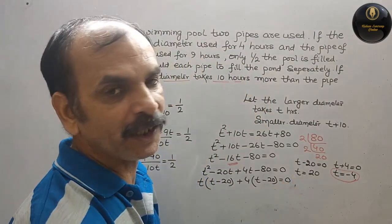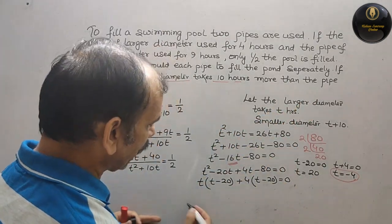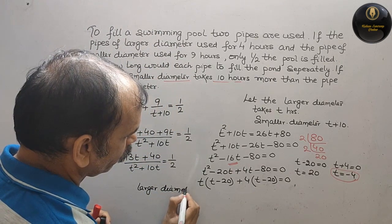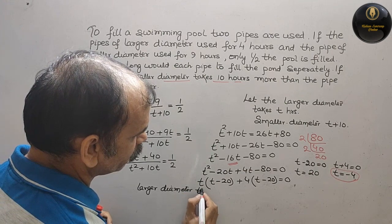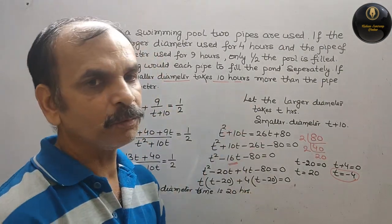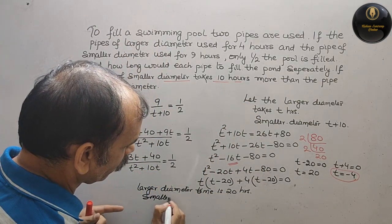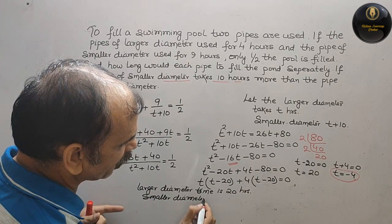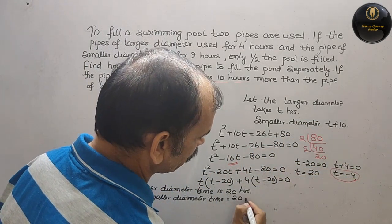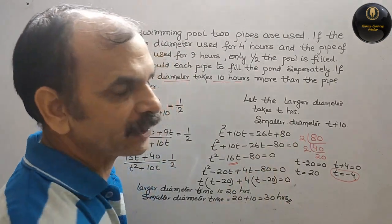तो t = 20, और हमने t larger diameter का time लिया था। तो larger diameter का time is 20 hours — वो अकेले ही 20 hours में swimming pool fill कर देगा। और smaller diameter का time होगा t + 10 = 20 + 10 = 30 hours।